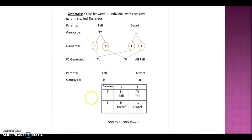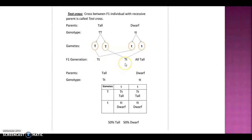Next is test cross. Test cross means a cross between the F1 individual with the recessive parent — that is called test cross. So here the tall parent crossed with the dwarf one produces tall individuals in F1. In the test cross, that F1 individual is crossed with its recessive (dwarf) parent, producing 50% tall and 50% dwarf individuals.